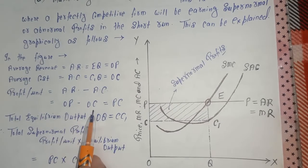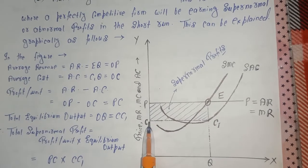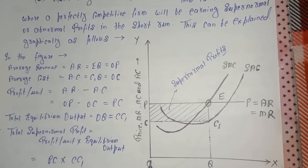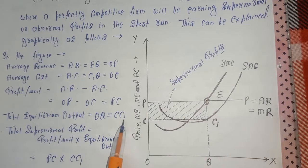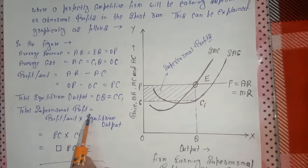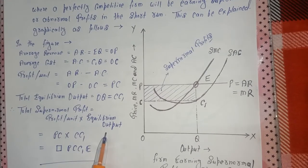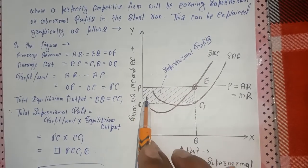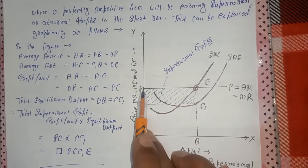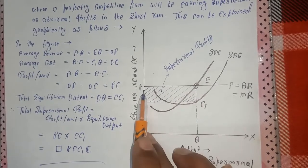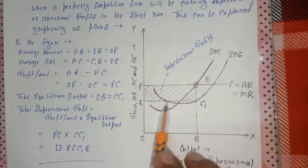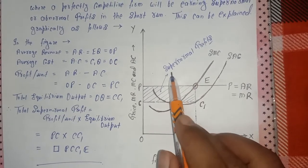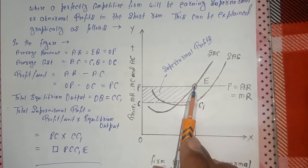Total equilibrium output is OQ. Total super normal profit equals profit per unit multiplied by equilibrium output: PC into CC1, which gives the rectangular area P, C, C1, E. This rectangular area represents the super normal profit of the firm in the maximizing profits situation.